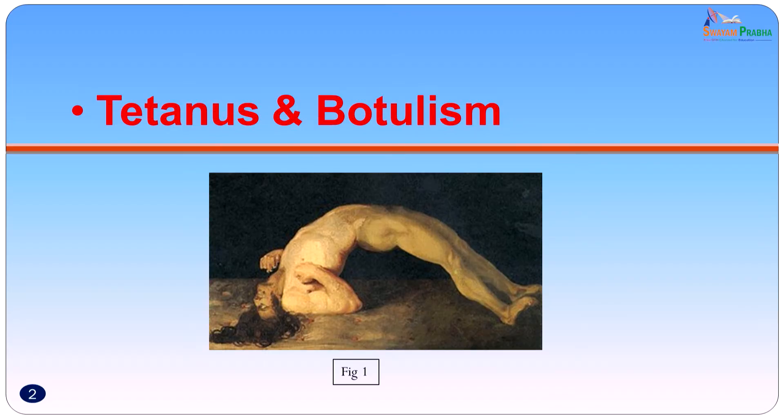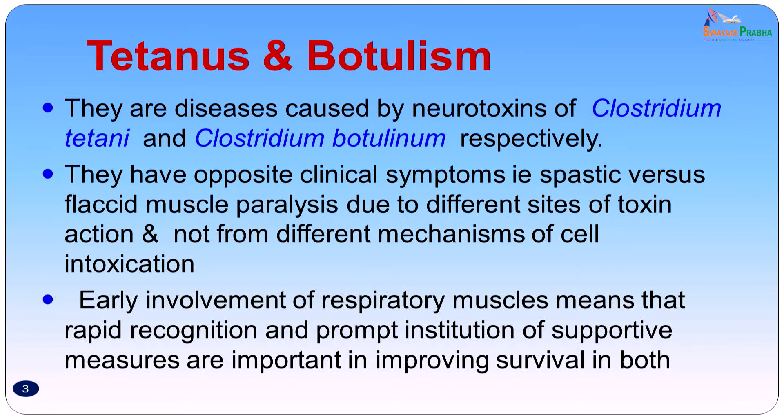Welcome to today's session. Today's session we will be dealing with bacterial toxins which affect the nervous system. Essentially we are dealing with two diseases: tetanus and botulism. Both these diseases have a lot in common. They are diseases caused by neurotoxins of Clostridium tetani and Clostridium botulinum respectively.